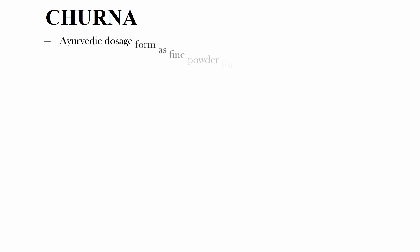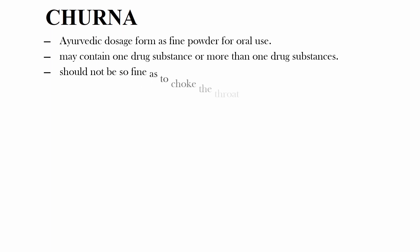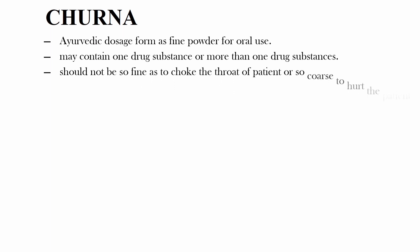Here we will begin with an introduction. Churn are Ayurvedic dosage forms as fine powder for oral use. A Churn may contain one drug substance or more than one drug substance. Churn are fine powder but should not be so fine as to choke the throat of the patient, or so coarse as to hurt the patient.